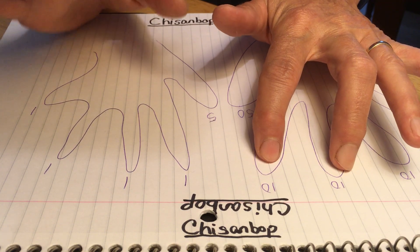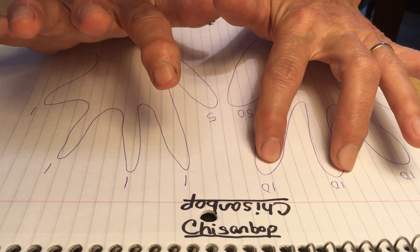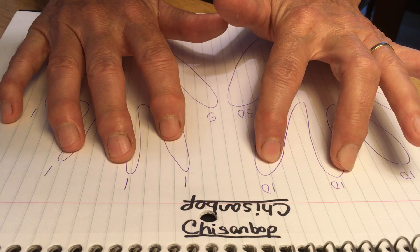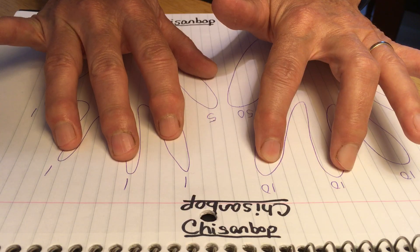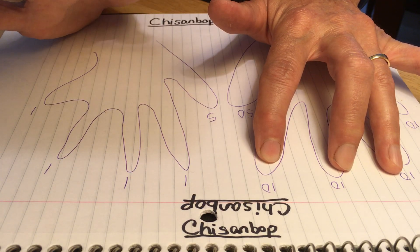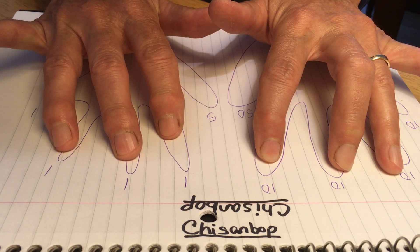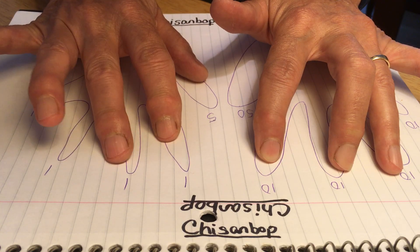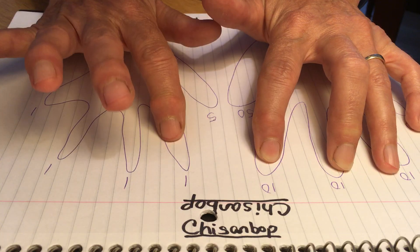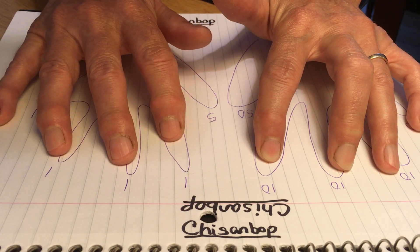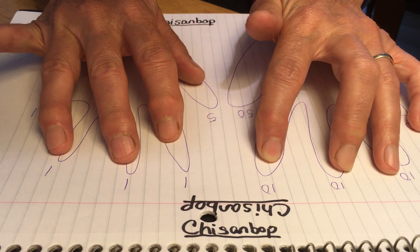You see there's two tens, and so that's 20. 21, 22, 23, 24, 25, 26, 27, 28, 29, and 30. 31, 32, 33, 34, 35, 36, 37, 38, 39, 40, 41, 42, 43, 44, 45, 46, 47, 48, 49.